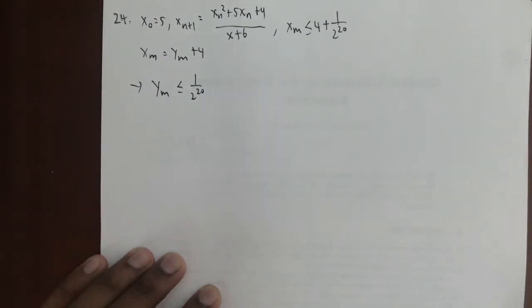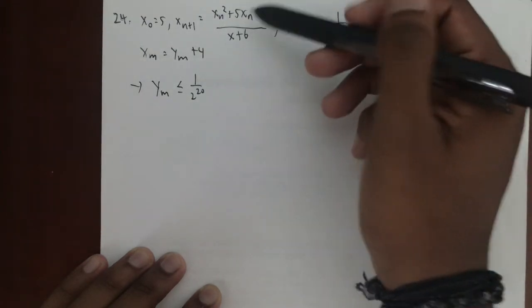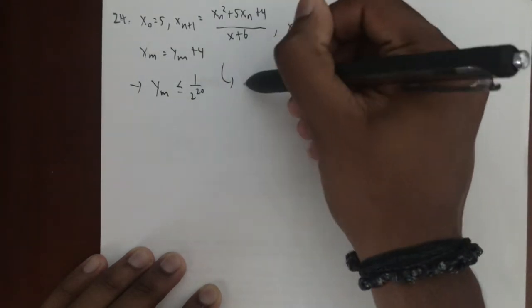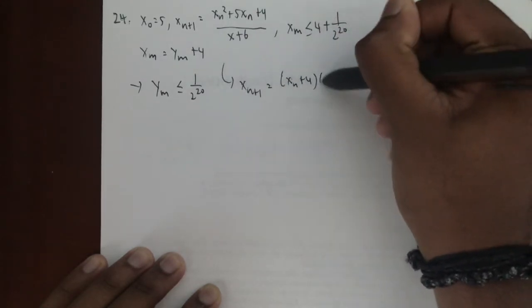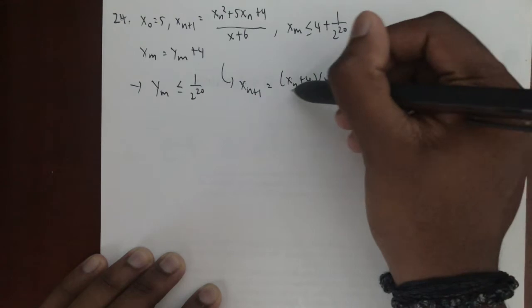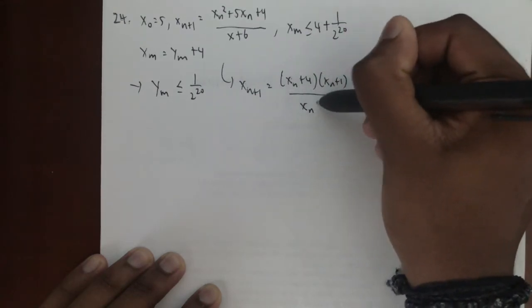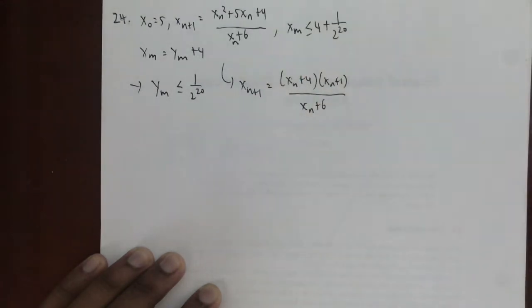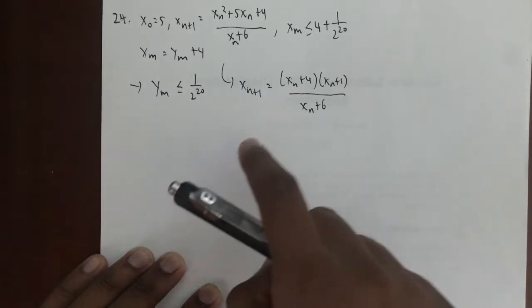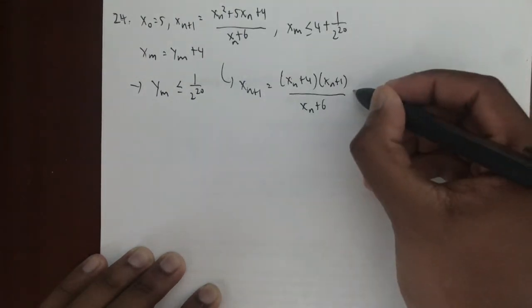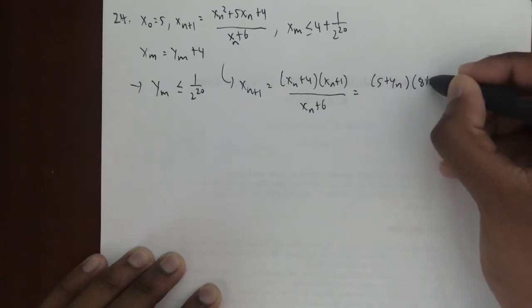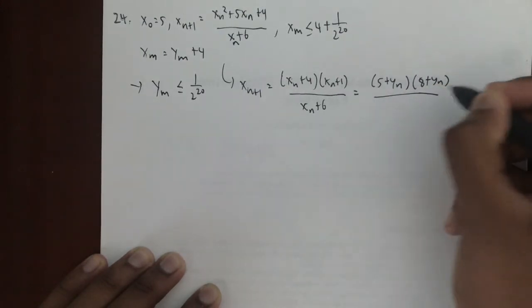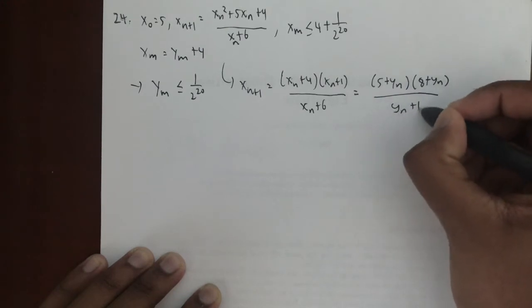Now first, I want to factor this x_n part on the top. I can rewrite this as x_{n+1} = (x_n + 4)(x_n + 1)/(x_n + 6). Now we're going to apply the substitution we had earlier, and then we get (5 + y_n)(8 + y_n)/(y_n + 10).